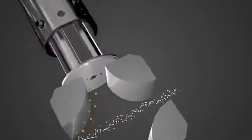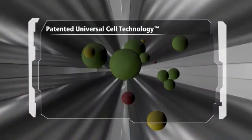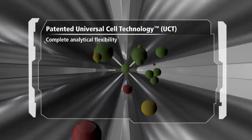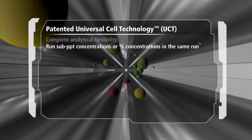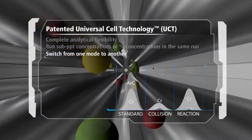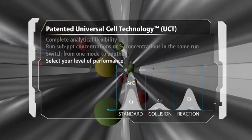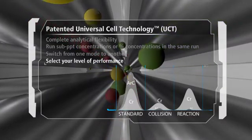As the focused beam of ions passes into Perkin Elmer's patented universal cell, the instrument's unparalleled versatility is never more noticeable. With three gas channels available and the ability to run in standard, collision, or reaction modes, the system empowers you with greater flexibility to choose the most appropriate mode of interference removal for the analysis at hand.